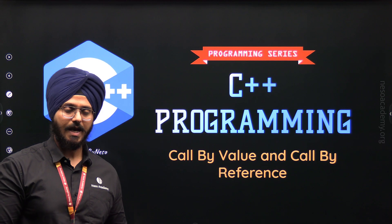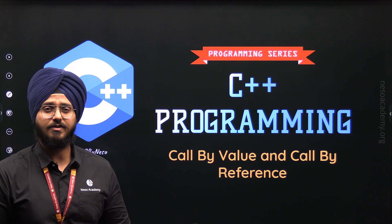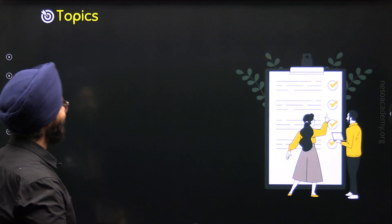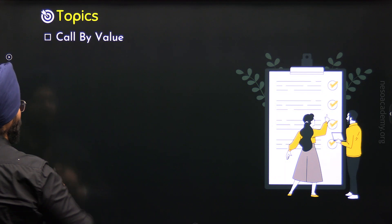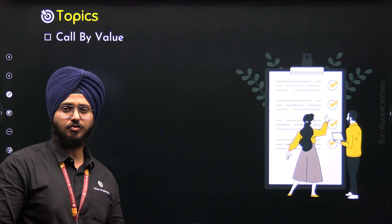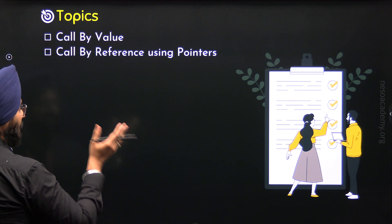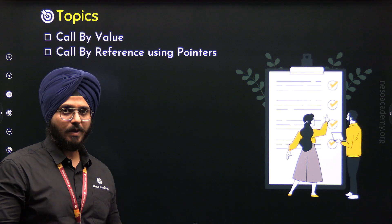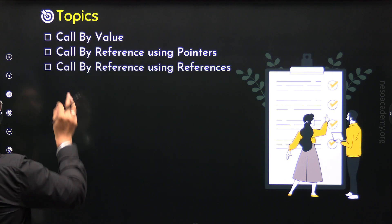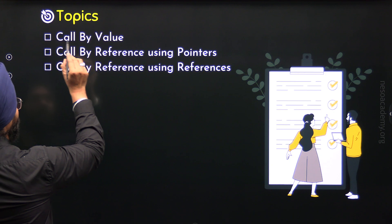In this lecture, we will properly understand how to call a function by value and how to call a function by reference, and we will understand the difference between the two. The first topic is Call by Value. Then we will move to Call by Reference using pointers, where the basics of pointers we already know are enough. Then we will understand Call by Reference using references. Let's start with the first one: call by value.